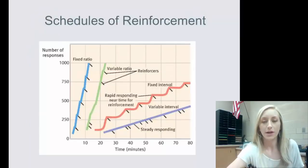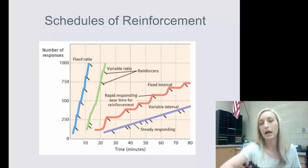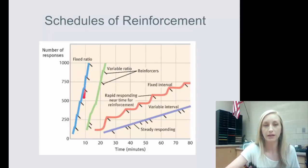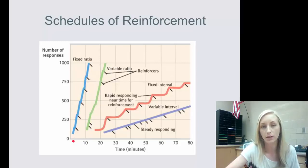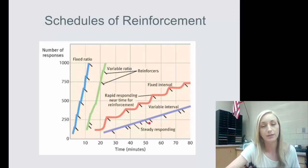This chart shows what we were discussing about resistance to extinction and how quickly we learn to respond. The blue line on the far left is fixed ratio — you know when reinforcement is coming and it's based on the number of responses. You learn very quickly, but notice that over time it will eventually drop; it's not as resistant to extinction.